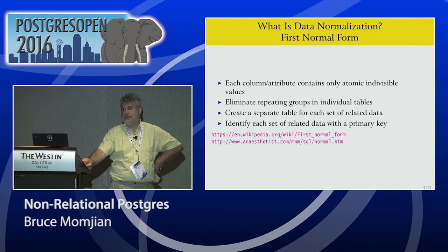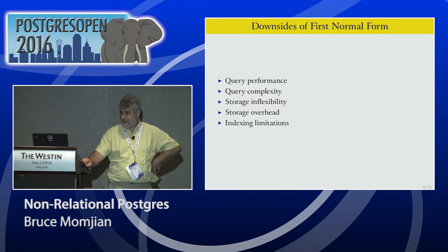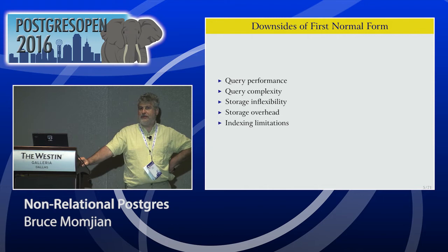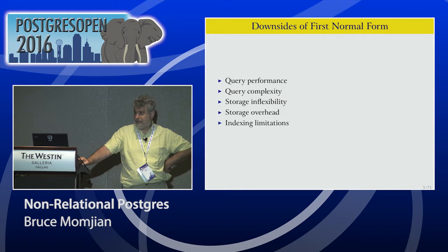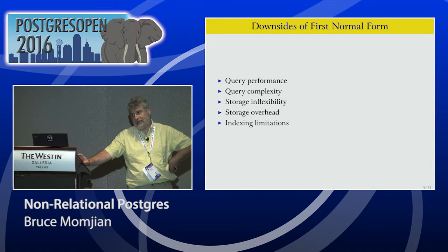First normal form is not always ideal. Yes, it's very flexible and probably the way you should start most of your data modeling. But you need to identify when that data modeling doesn't fit any of the normal forms. First, query performance — first normal form can suffer from query performance issues. Queries can become very complex as you atomize the data, as you normalize it. Storage can be inflexible, and storing things atomized is very inefficient. There are also indexing limitations, which I'll explain as we get further into the presentation.